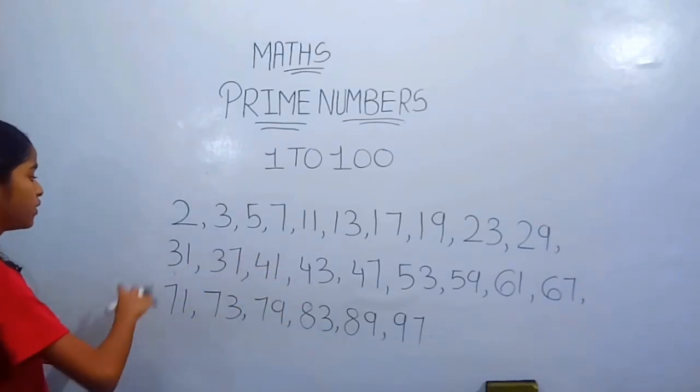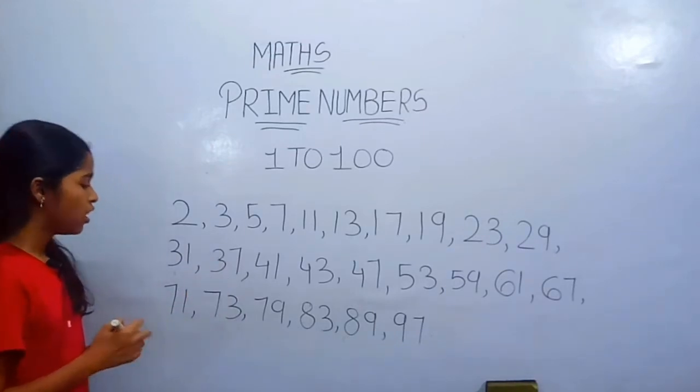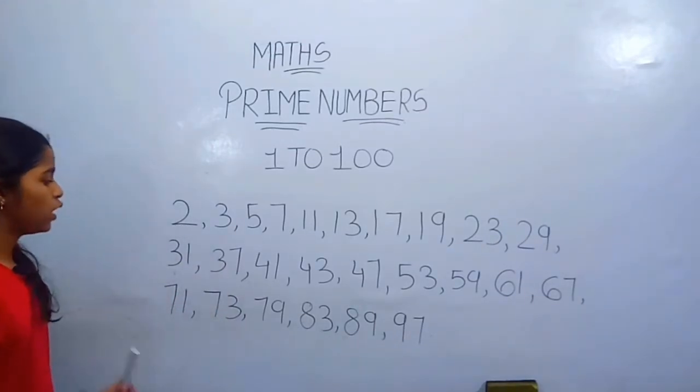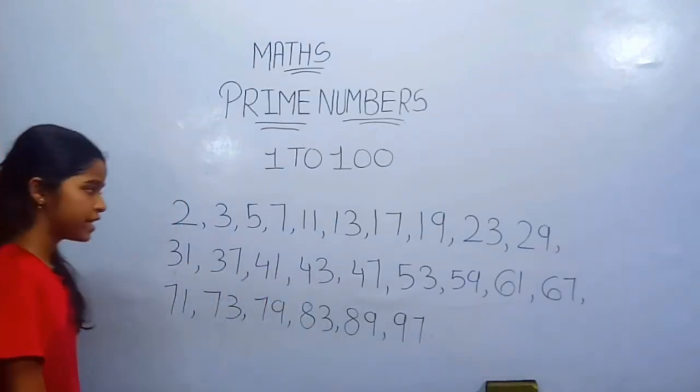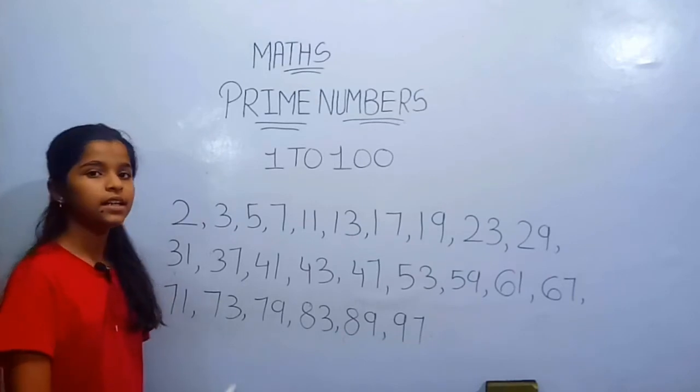And from these all numbers, no other number comes in any of the table. Only these all prime numbers come in one's table and the number itself.